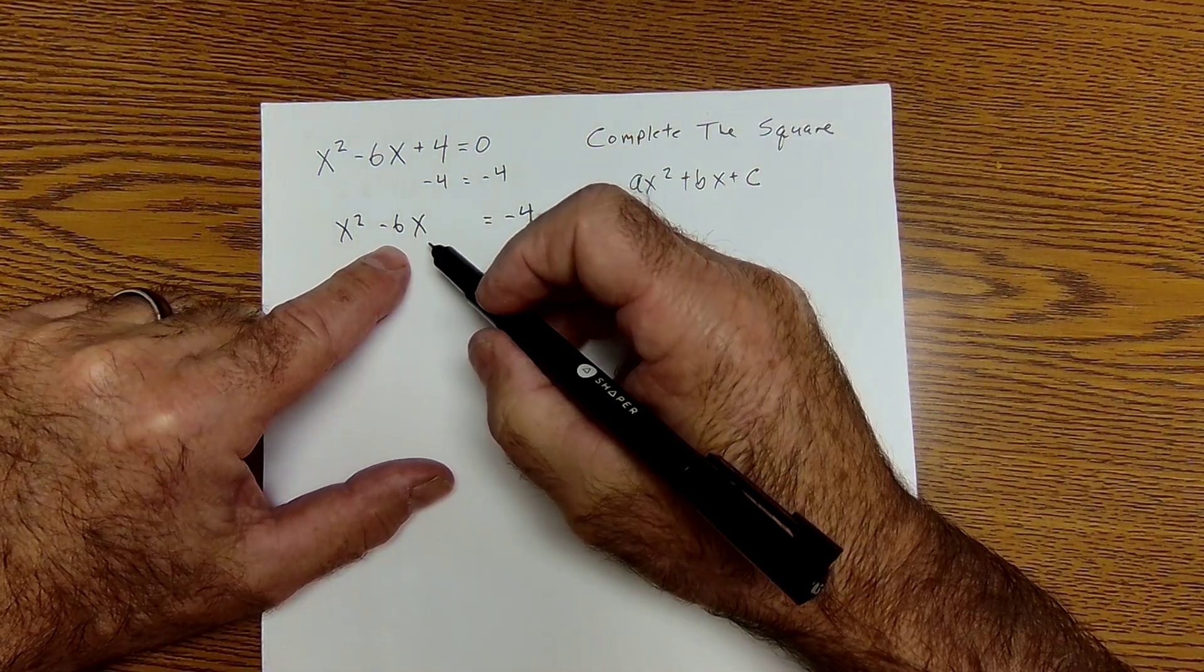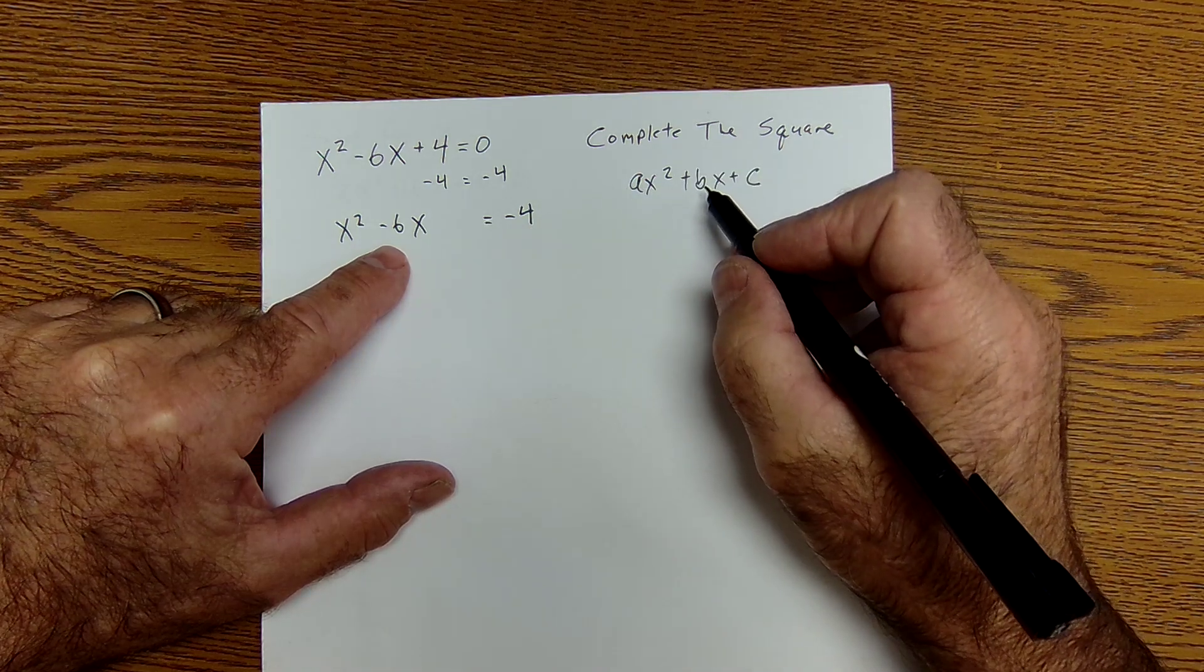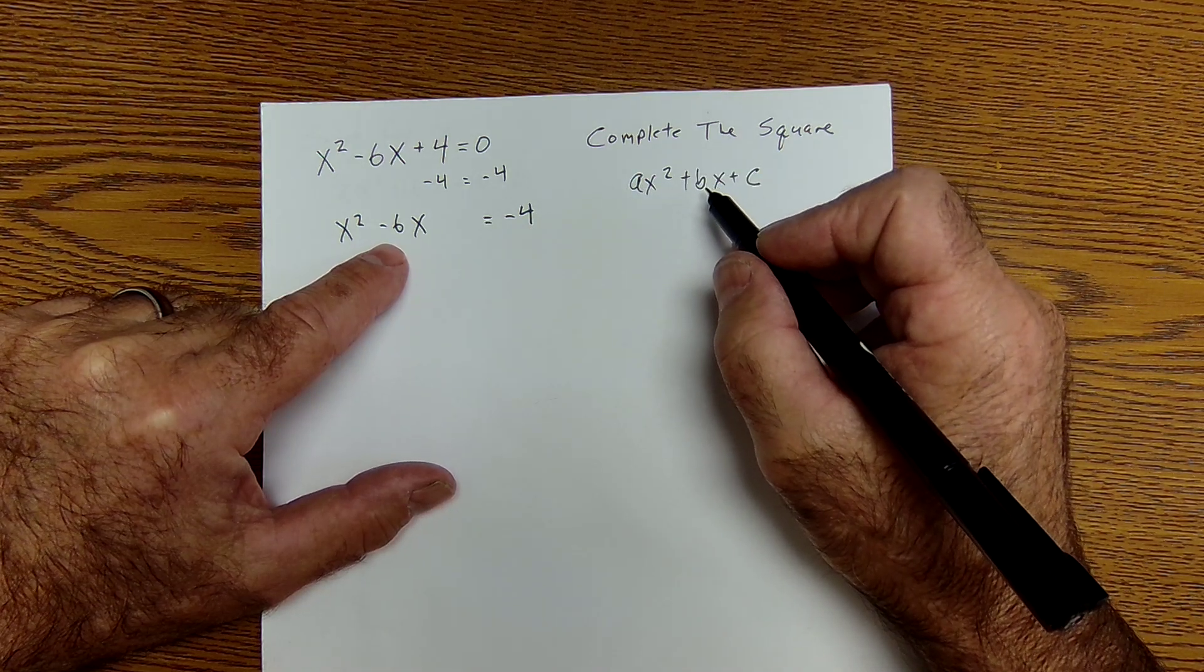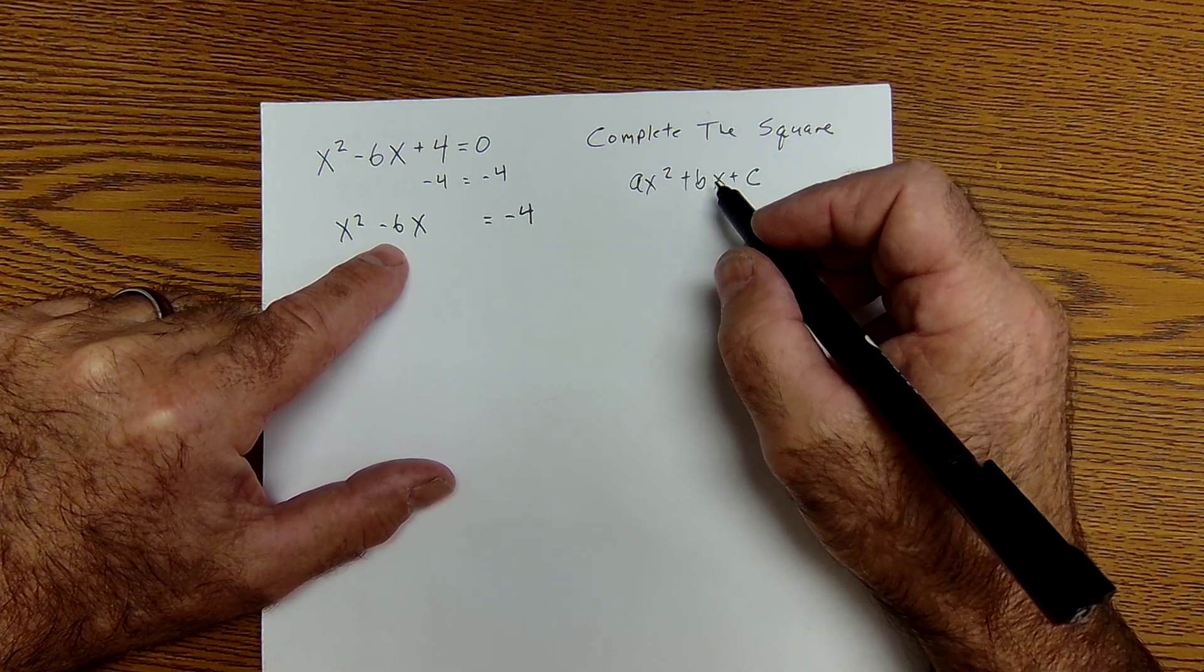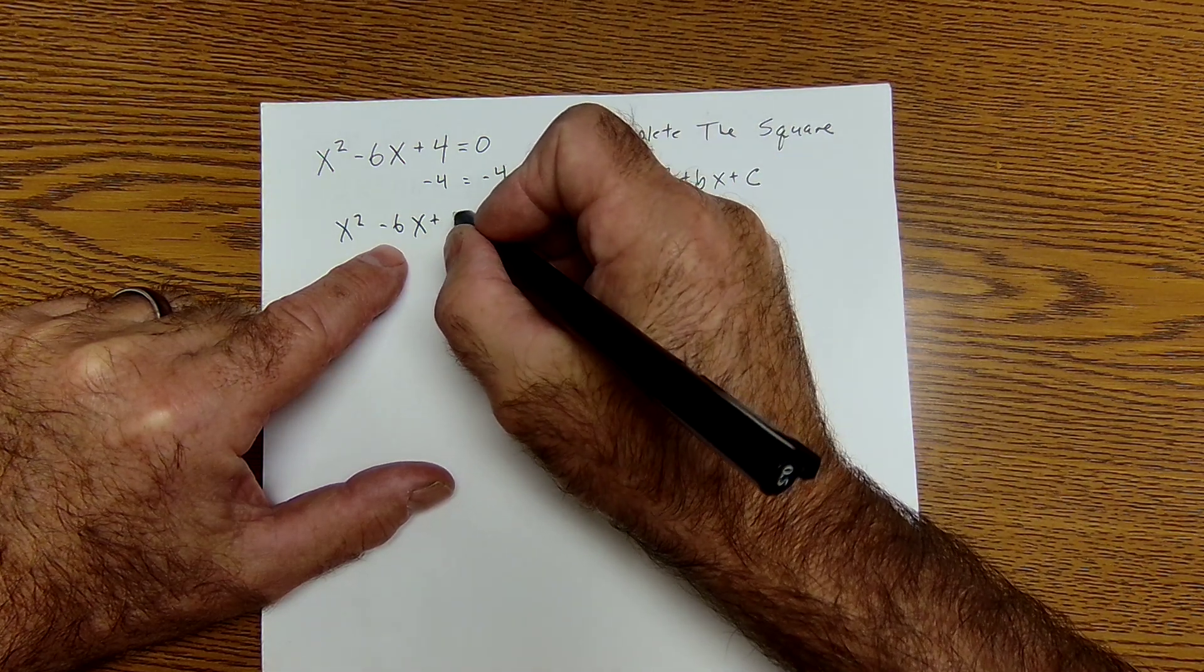Then I'm going to take half of the B value, negative 3, and square it. I'm going to add 9 here.